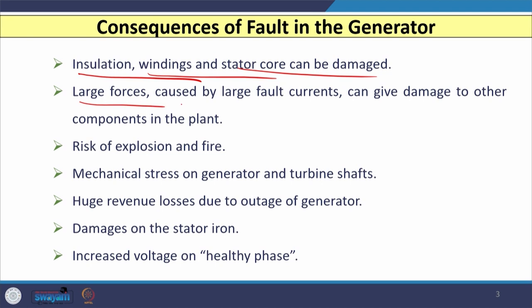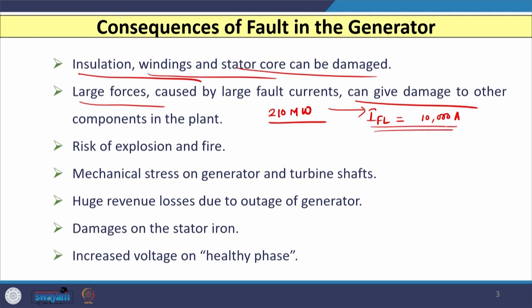Large forces may develop because of the large magnitude of fault current, which can also damage other components of the plant. For a 210 megawatt generator, the full load current that the winding can carry is very close to 10,000 amperes. If a fault occurs, 6 to 10 times this current flows through the winding, producing large forces that may damage several other components. There is also a chance of explosion and fire because of the large magnitude of fault current.